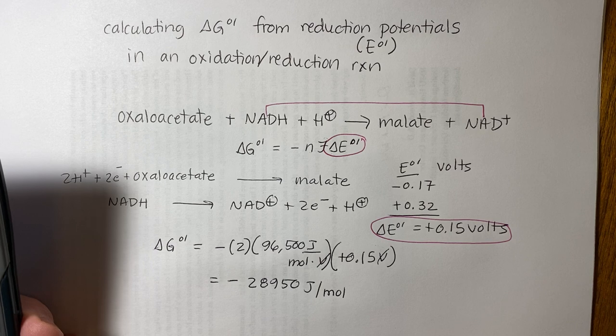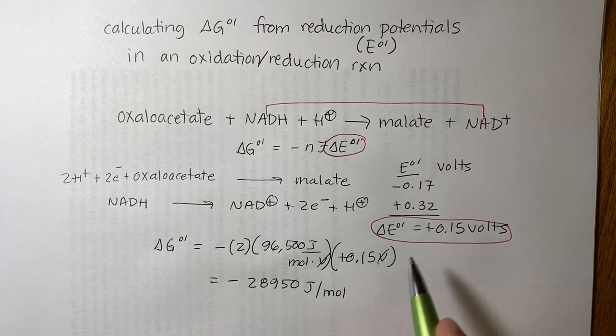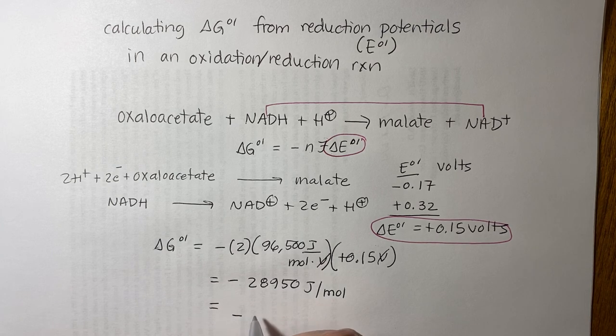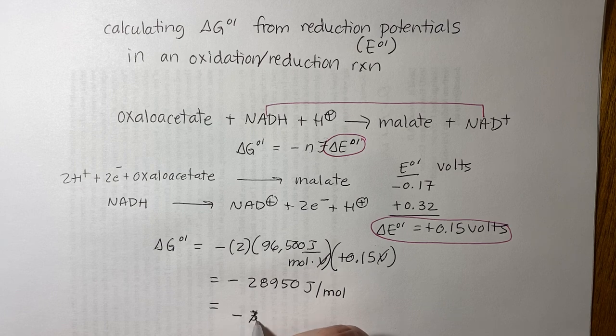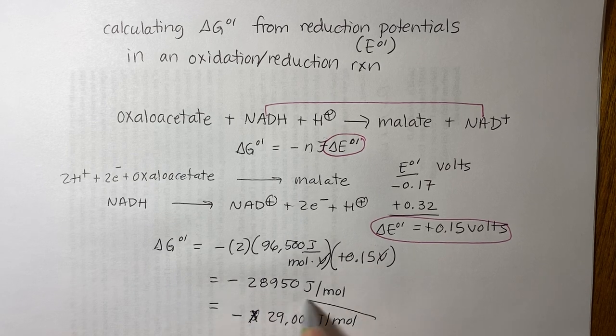And in terms of significant figures, we have two sig figs, I guess, based on the reduction potentials. So this will round to minus, I guess it would be minus 2900 joules per mole. So that would be our final answer.